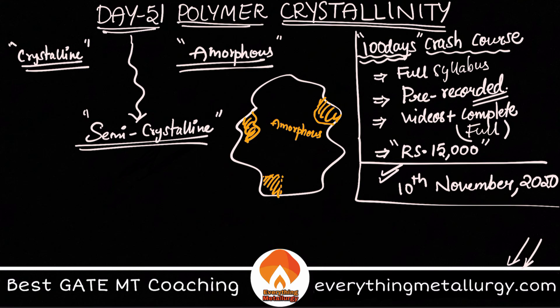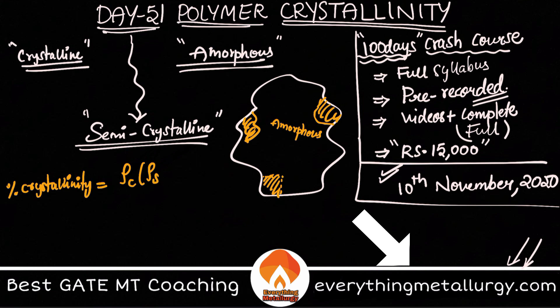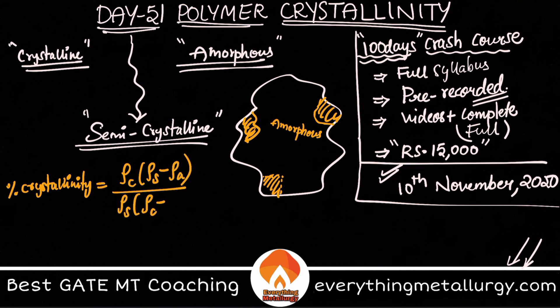Most polymers are actually semi-crystalline in nature. To calculate it, we have a formula for percentage crystallinity. Percentage crystallinity equals: rho_c times (rho_s minus rho_a), divided by rho_s times (rho_c minus rho_a), multiplied by 100.